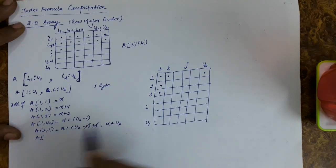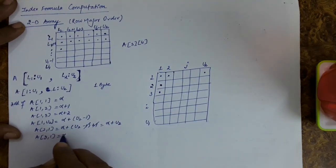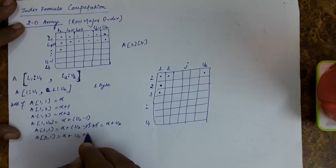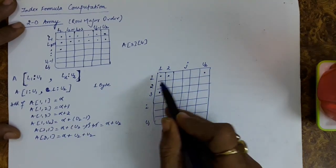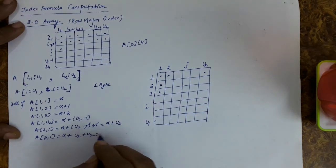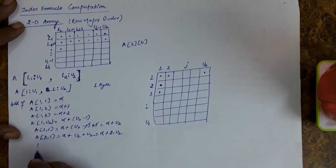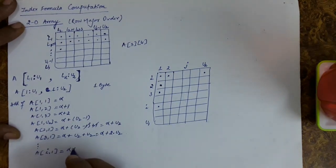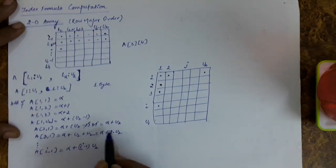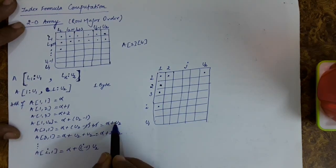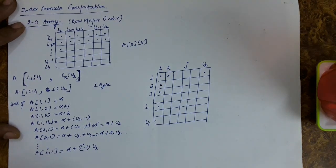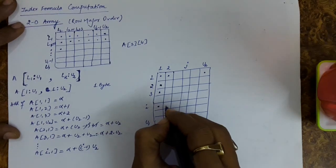Similarly, the address of the first element of the third row is alpha + U2 + U2 = alpha + 2*U2, since there are U2 elements in each of the first two rows. Therefore the address of the first element of the i-th row is alpha + (i - 1)*U2. If i = 2 it is 1*U2, if i = 3 it is 2*U2, so the pattern holds.